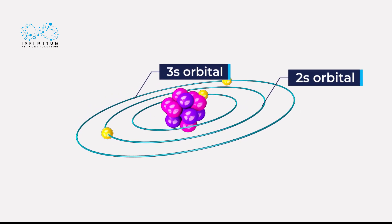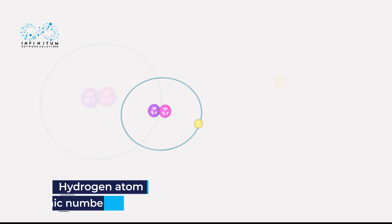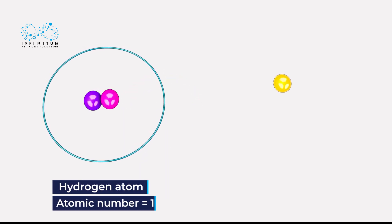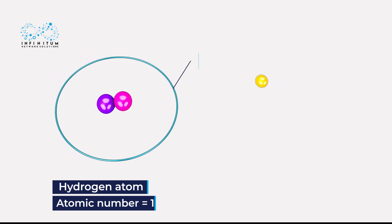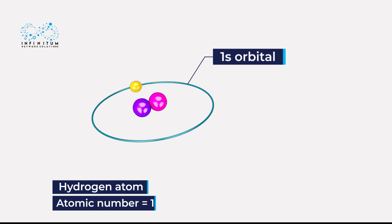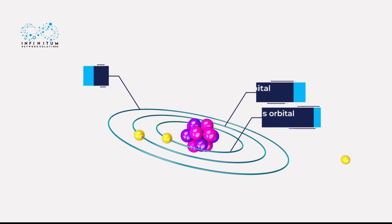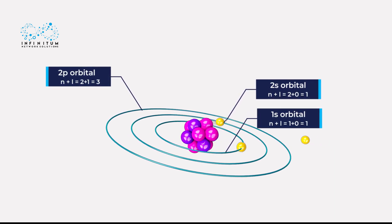The Aufbau or Building Up Principle can be explained with the example of the hydrogen atom. Hydrogen has one electron. This electron enters the 1s orbital which has the lowest energy. In other words, the Building Up Principle states that the incoming electrons go to an orbital which has the least n plus l value.